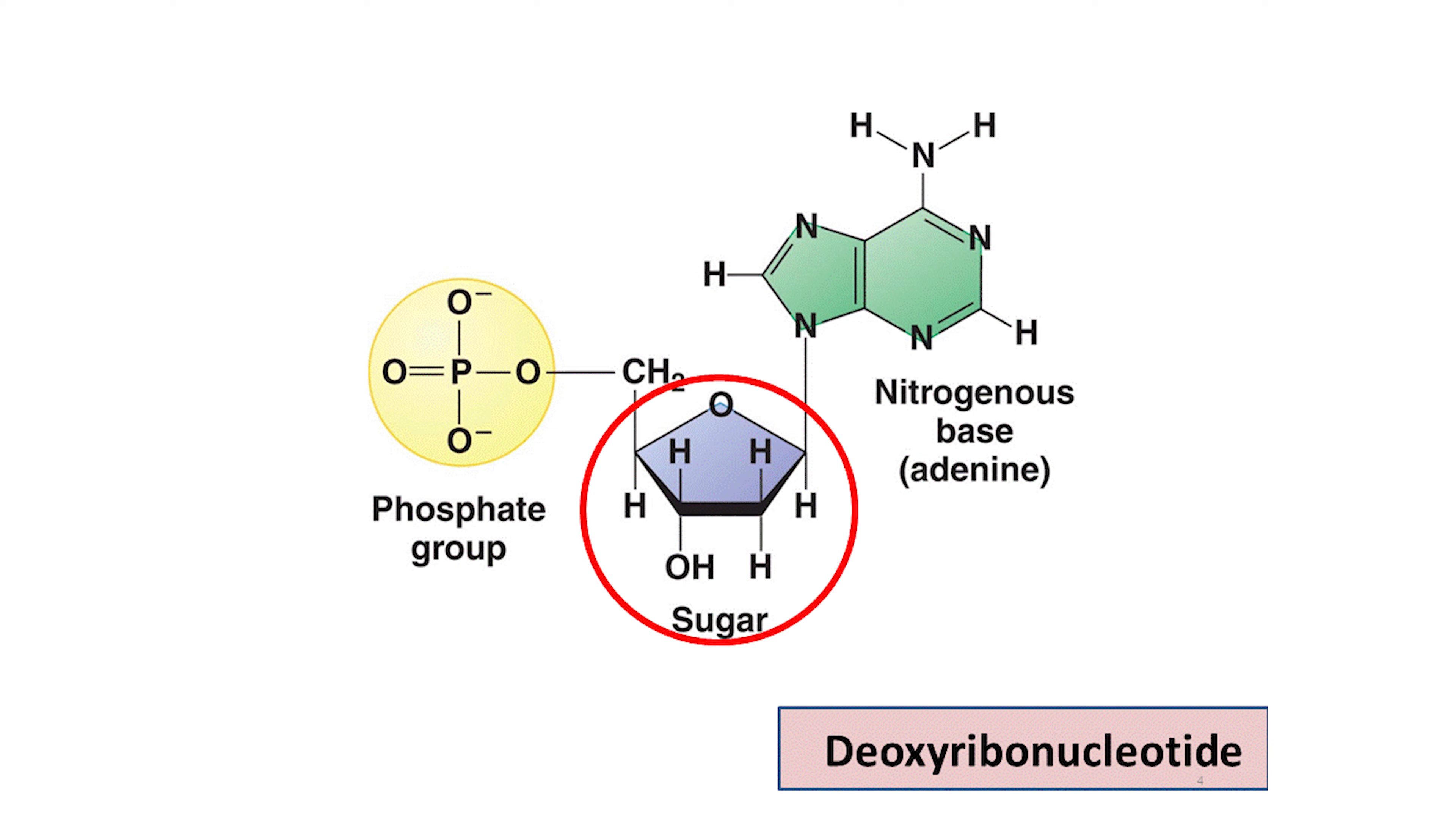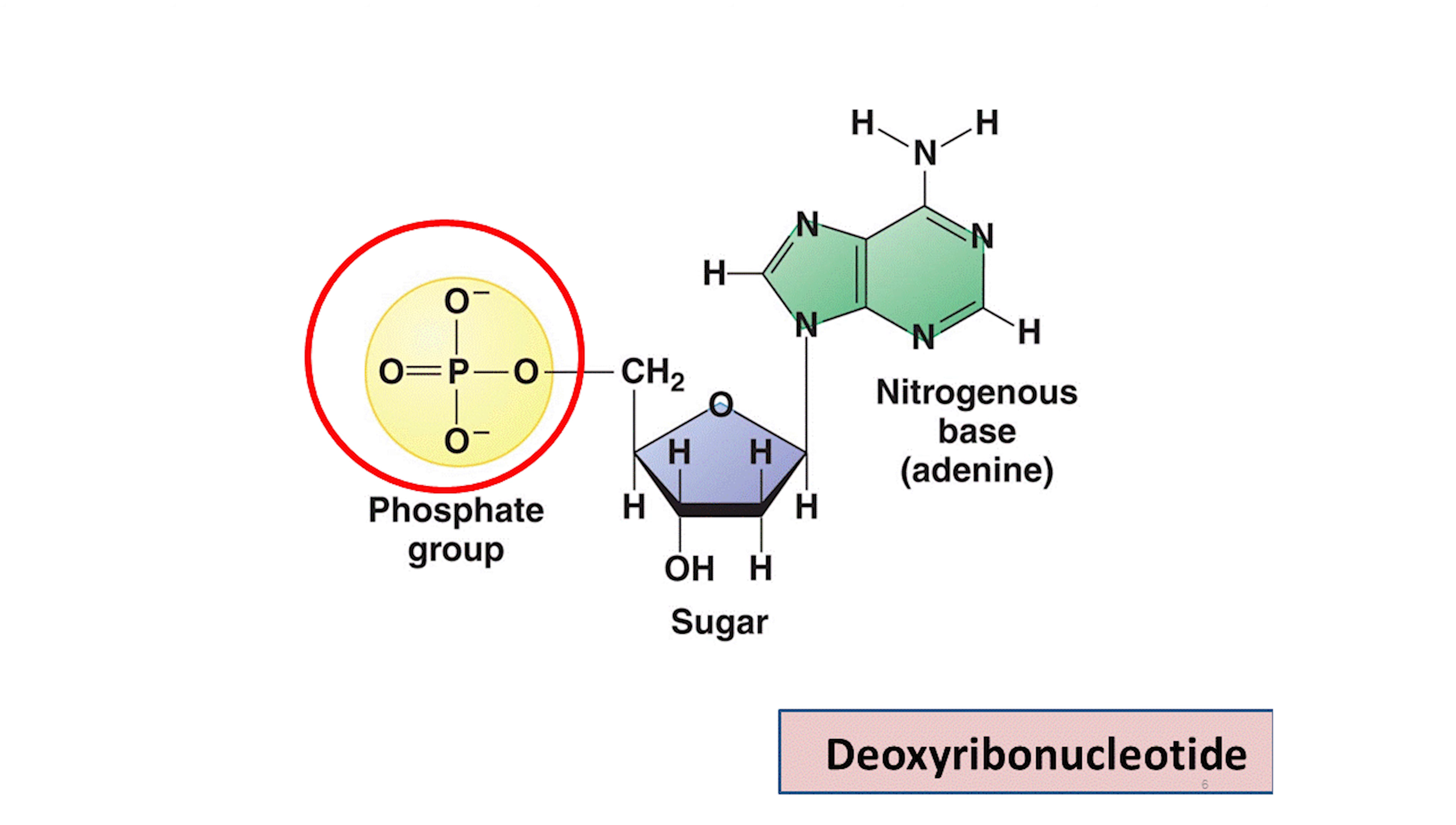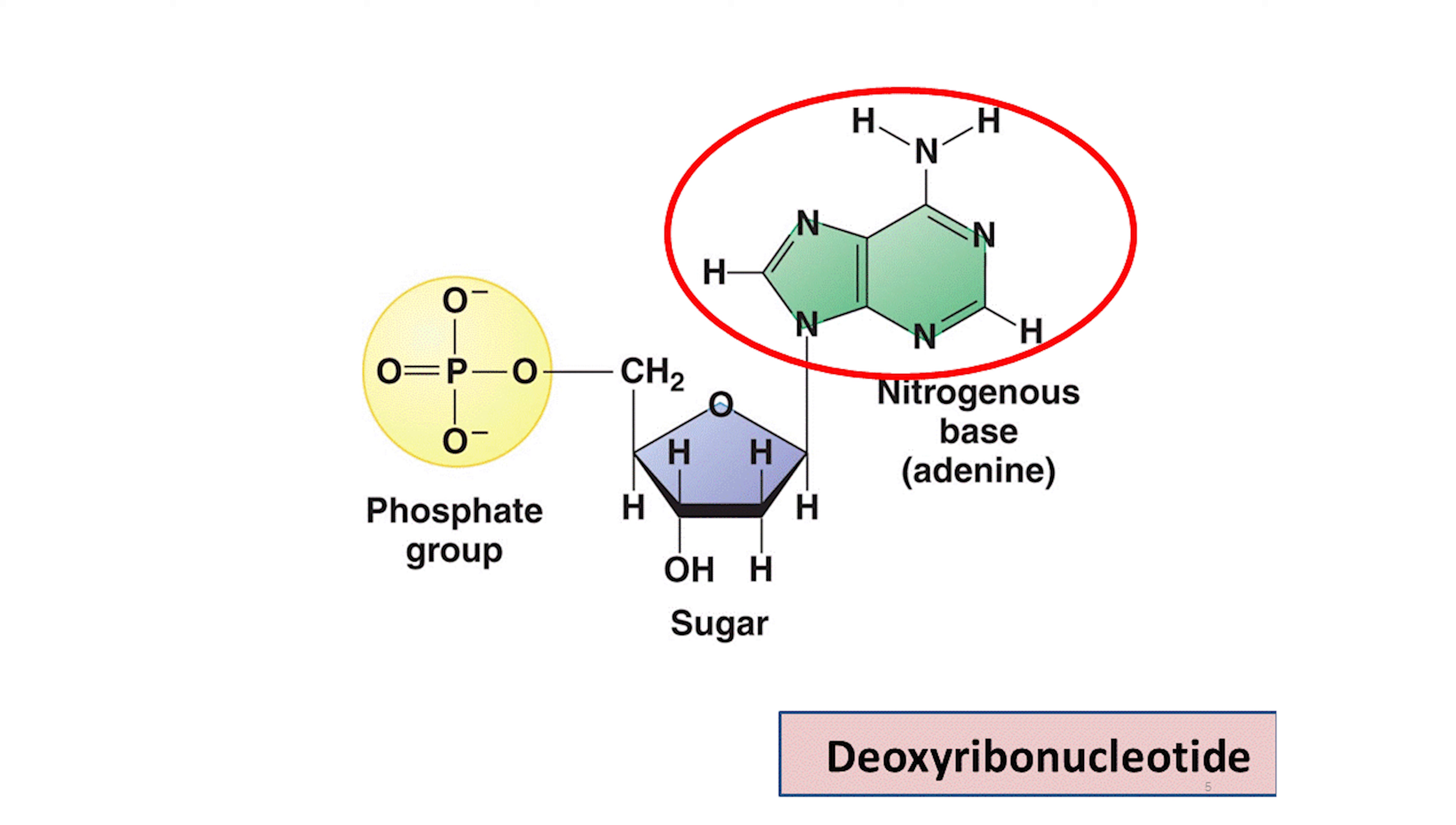The nucleotides are made of three different components: the deoxyribose sugar, the phosphate group, and the nitrogenous base.